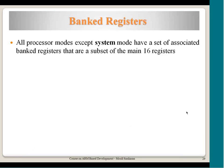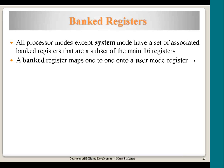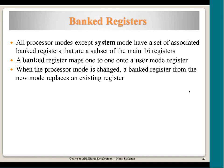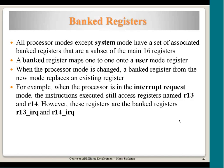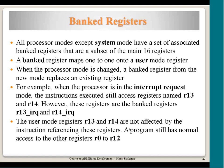All privileged modes except system mode have associated banked registers. System mode's banked registers map to the user mode registers. When the processor mode changes, the banked registers from the new mode replace the existing registers. For example, on an IRQ interrupt, accessing R13 and R14 will access the IRQ-banked R13 and R14, not the original user mode registers. R0 to R12 in IRQ mode are the same as user mode registers.